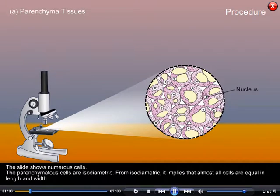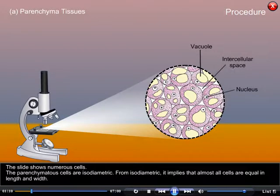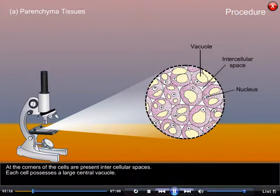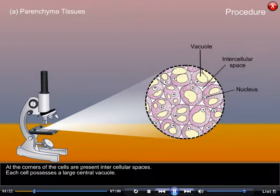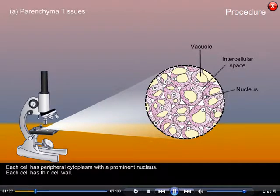The slide shows numerous cells. The parenchyma cells are isodiametric, meaning almost all cells are equal in length and width. At the corners of the cells, intercellular spaces are present. Each cell possesses a large central vacuole, peripheral cytoplasm with a prominent nucleus, and a thin cell wall.